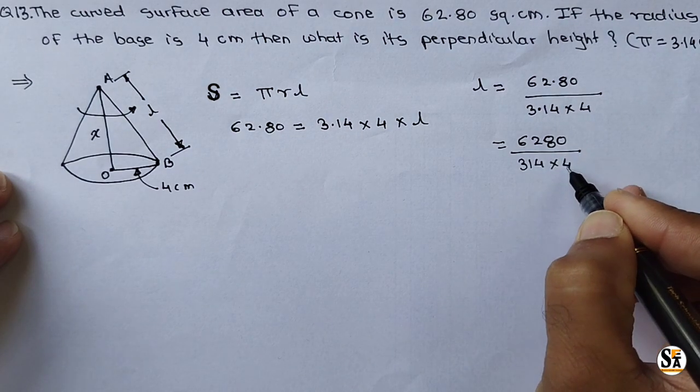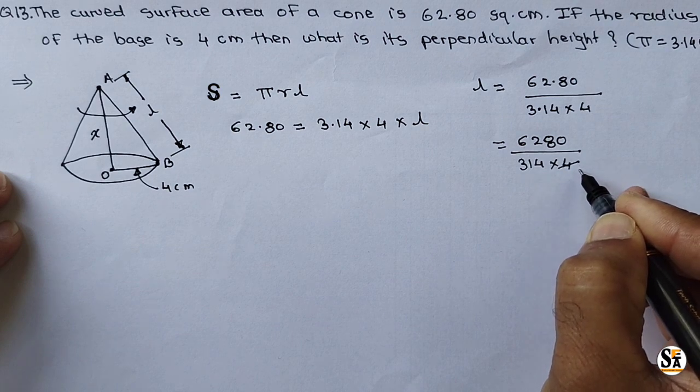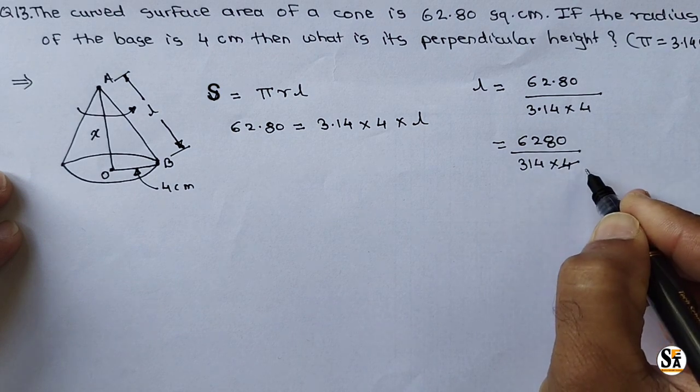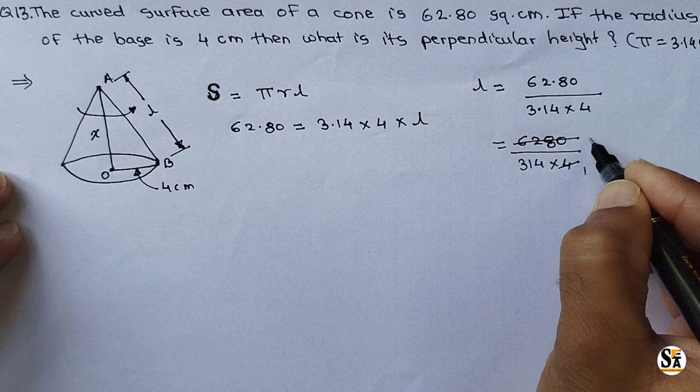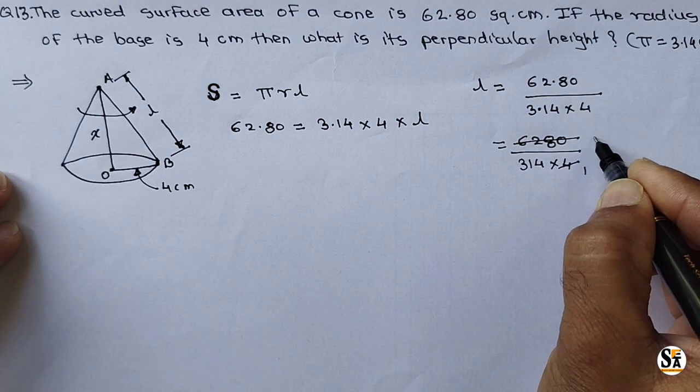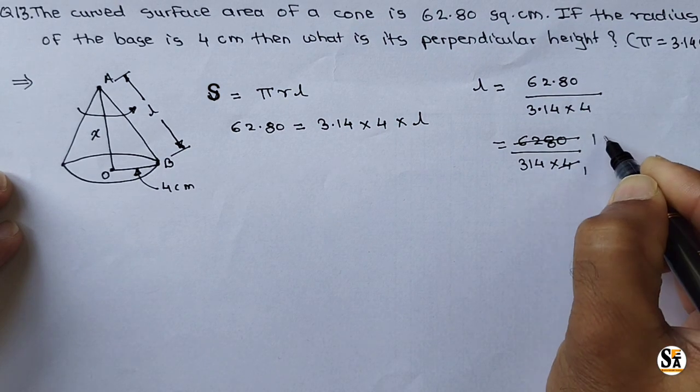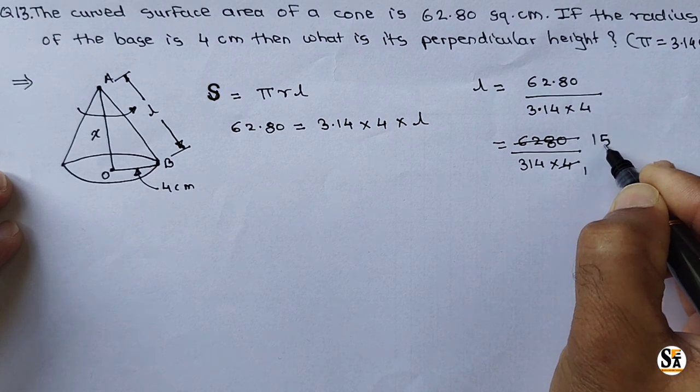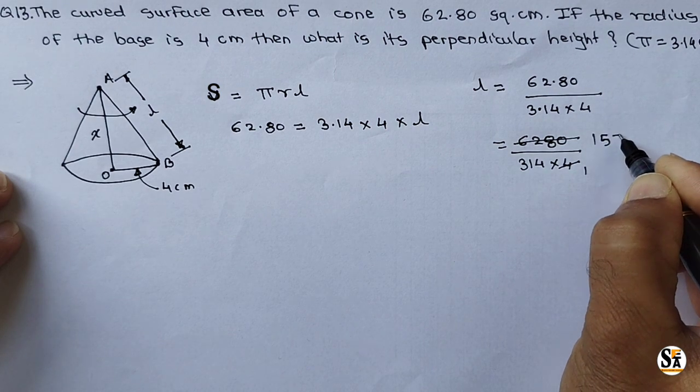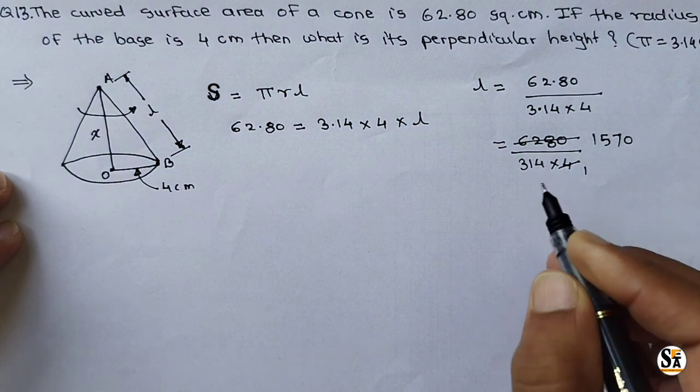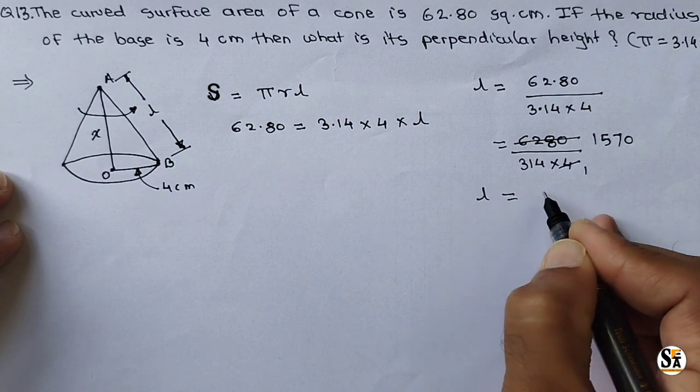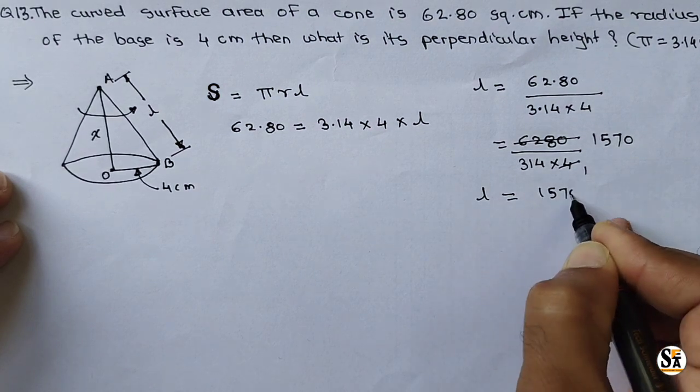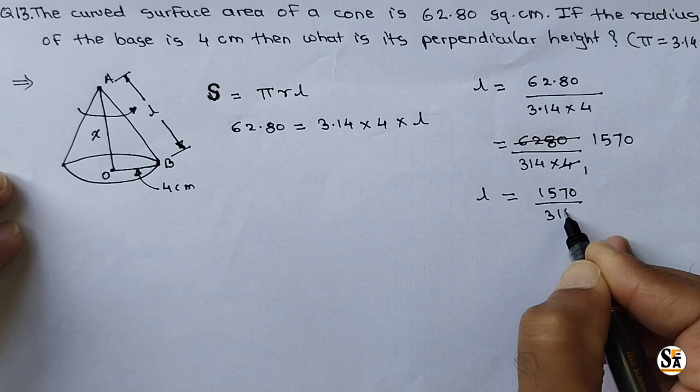Now see here, just divide by 4. Just divide this 6280 by 4. We will get 1570. So we got L equal to 1570 divided by 314.